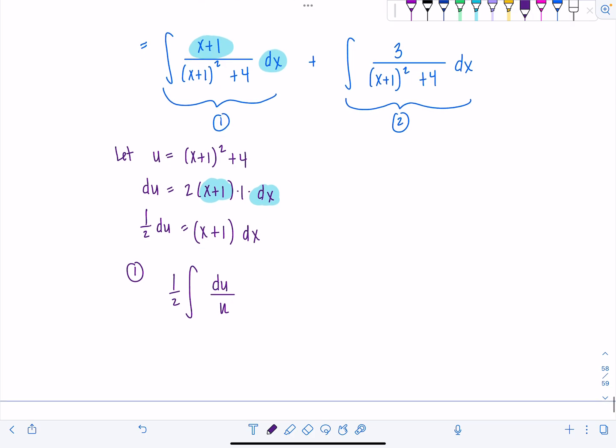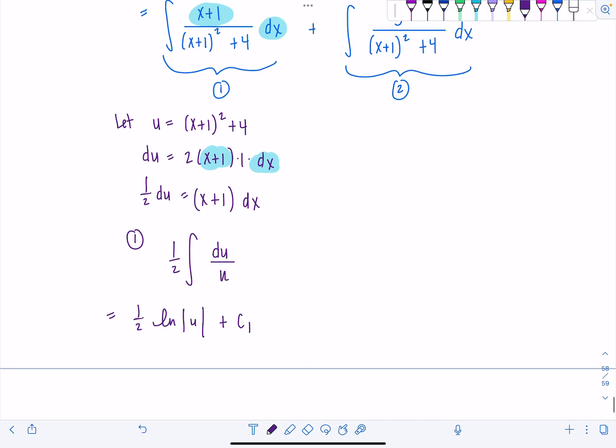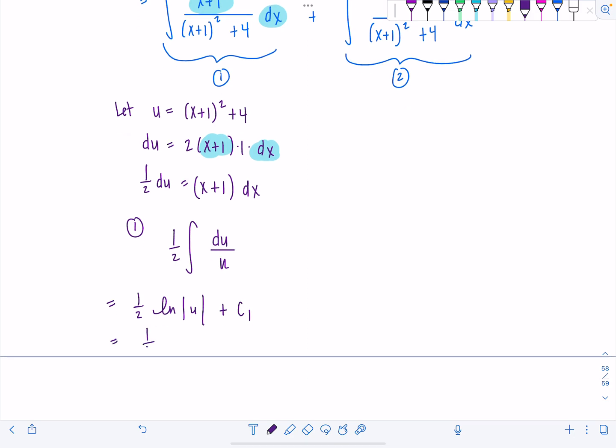So then this is going to be 1 half natural log, absolute value of u. I'm going to say plus c1, because we've got another integral to do. And then u was that x plus 1 quantity squared plus 4. So this is 1 half ln, absolute value, x plus 1 squared plus 4 plus c1.